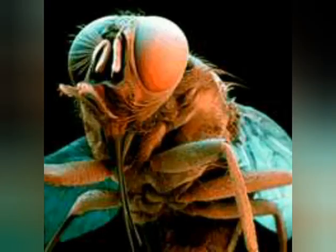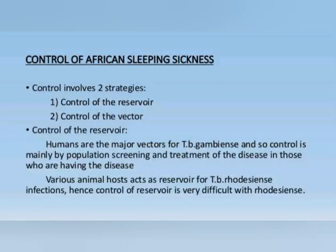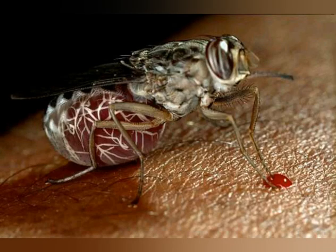Prevention can be achieved by taking pentamidine injections to protect against Trypanosoma brucei gambiense, but not against Trypanosoma brucei rhodesiense, as these two organisms have preferences for certain medications. Insect control measures can help prevent the spread and are the most effective approach. It is important to take active measures toward improving sanitary conditions and hygienic standards.